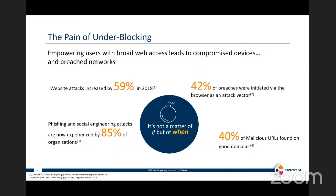The pain of under-blocking: web-based attacks increased by almost 60% in 2018. 42% of breaches take place via the browser — and that's not including plug-ins and other tools we add; just the browser itself accounts for 42% of attacks. Social engineering and phishing attacks have been experienced by 85% of organizations, and with COVID-19 these attacks are on the rise. Every time there's a large event, there's a rise in phishing. Additionally, 40% of malicious URLs are found on good domains through things like malvertising, where the ad ecosystem is breached by malicious content.